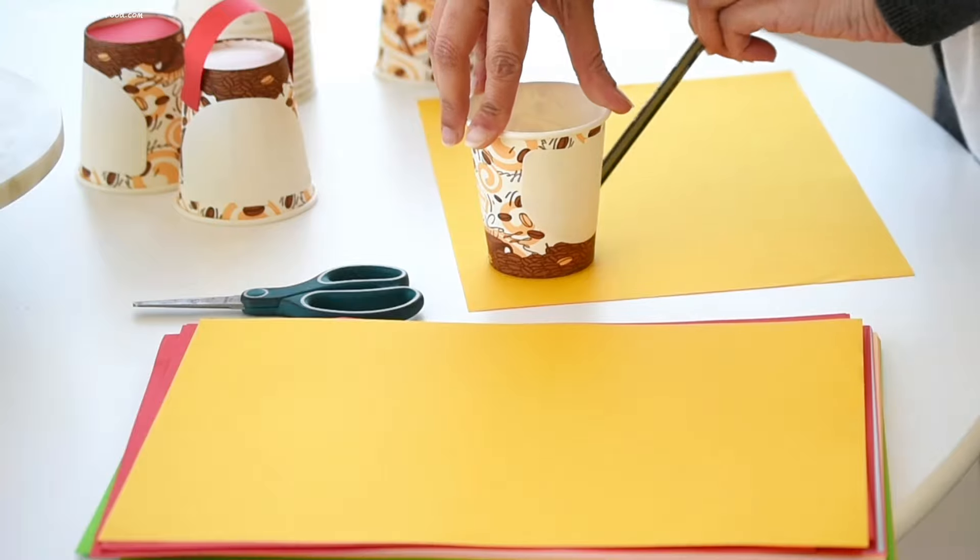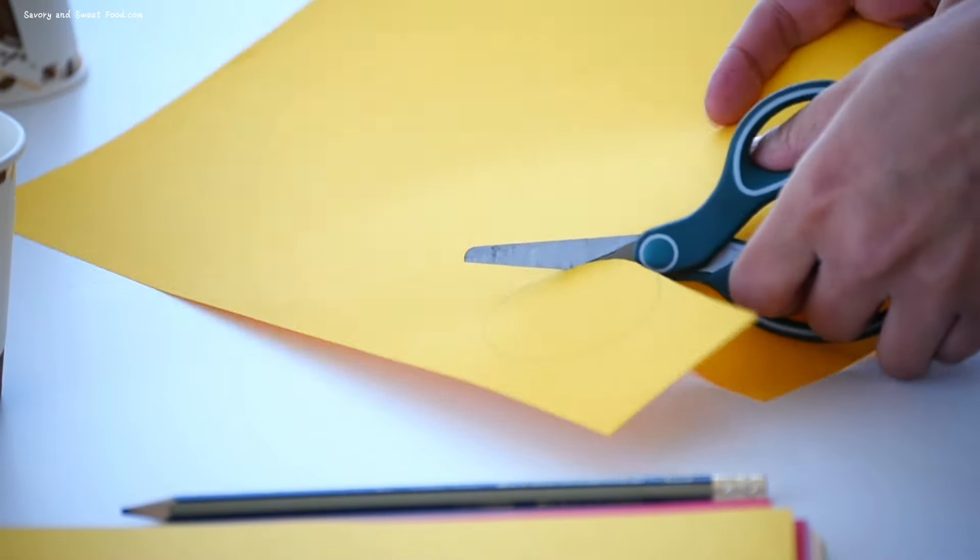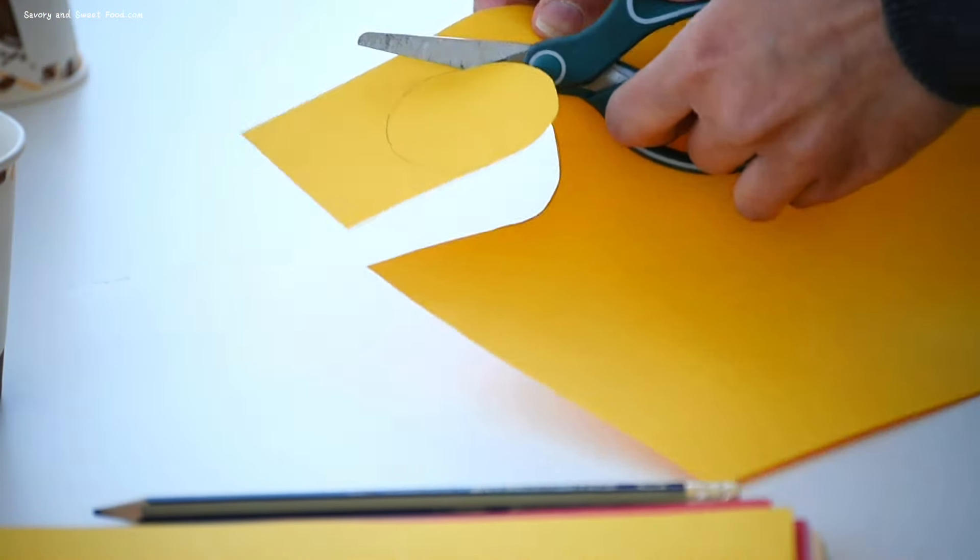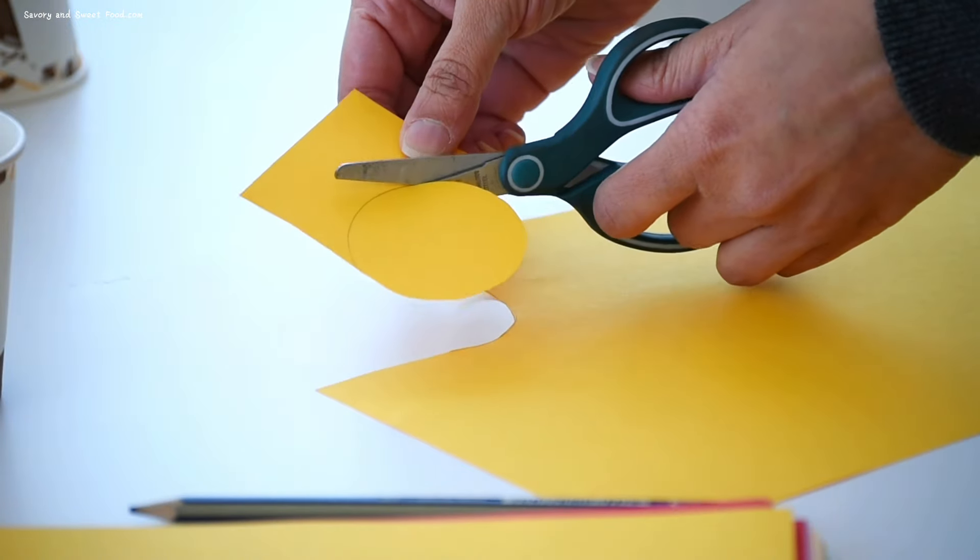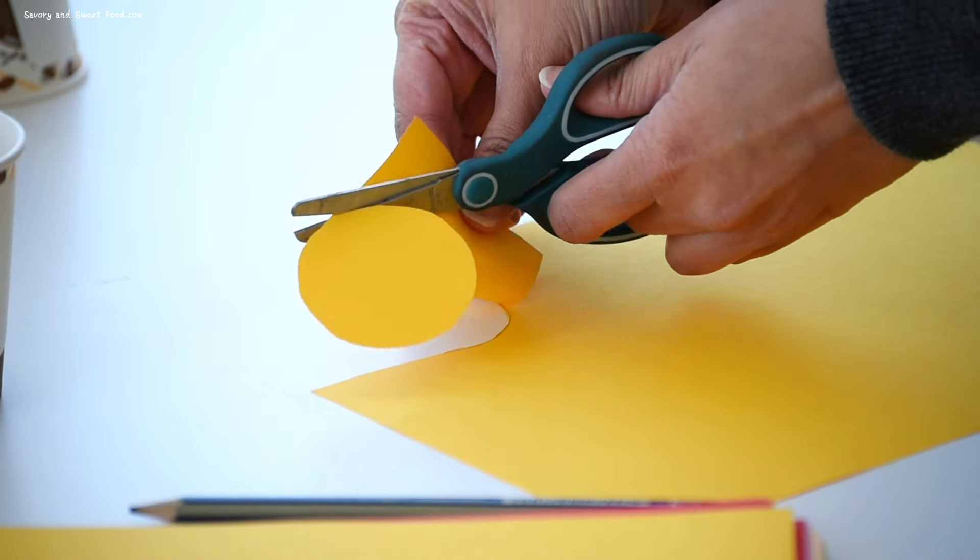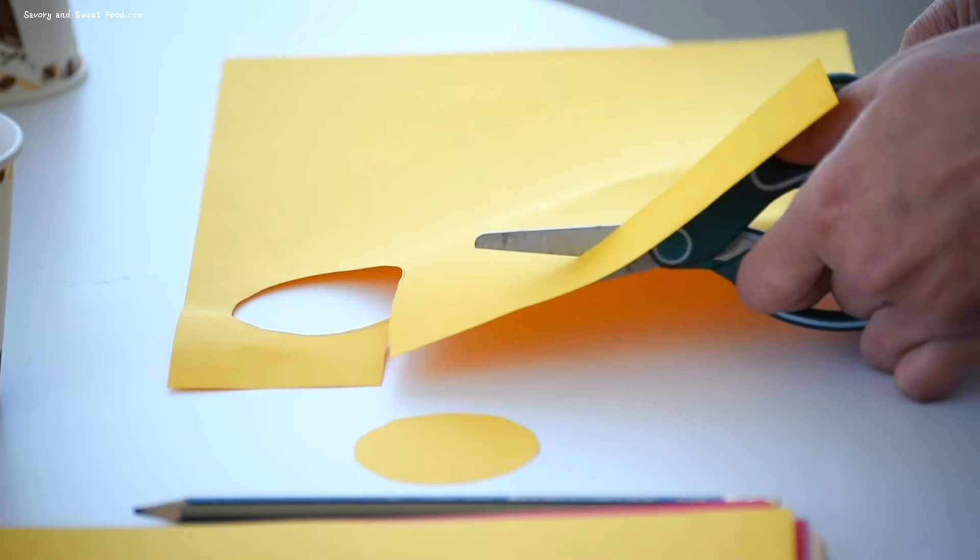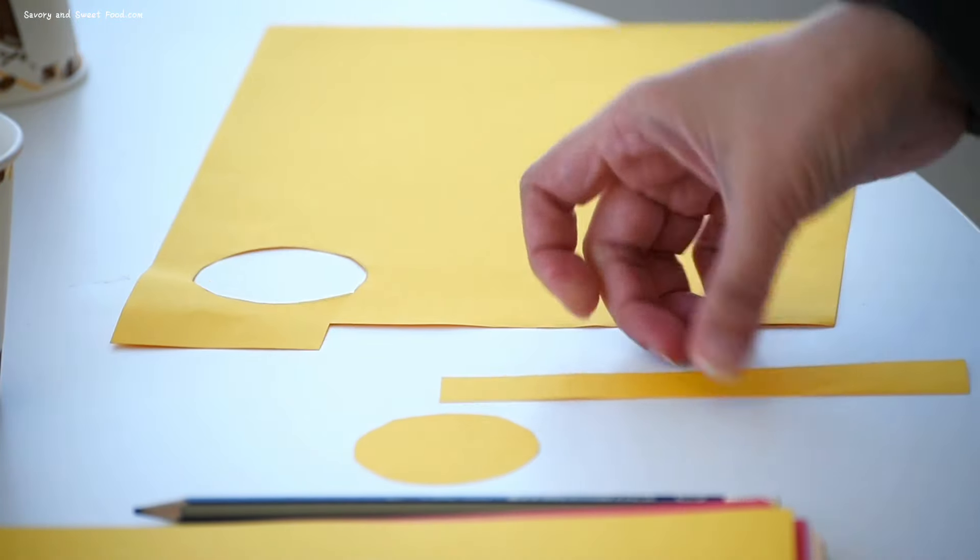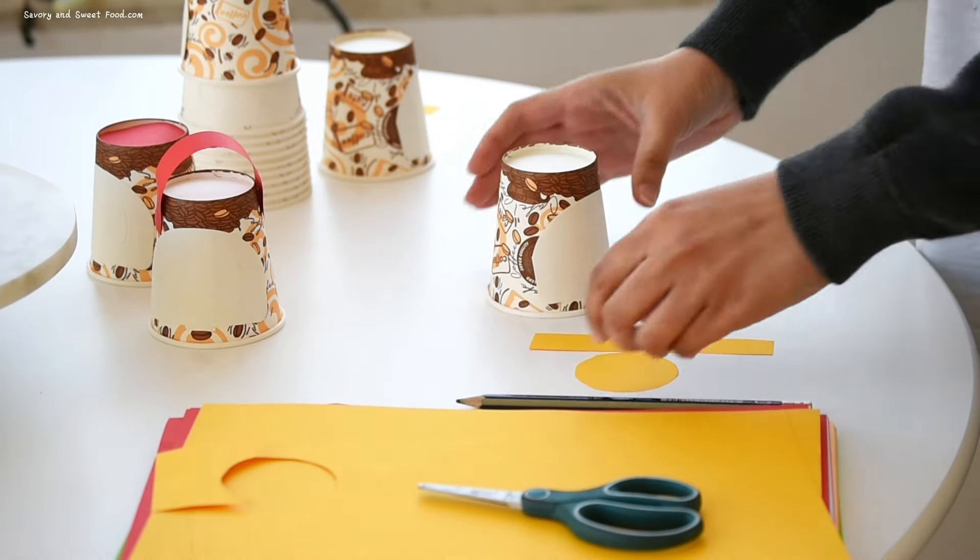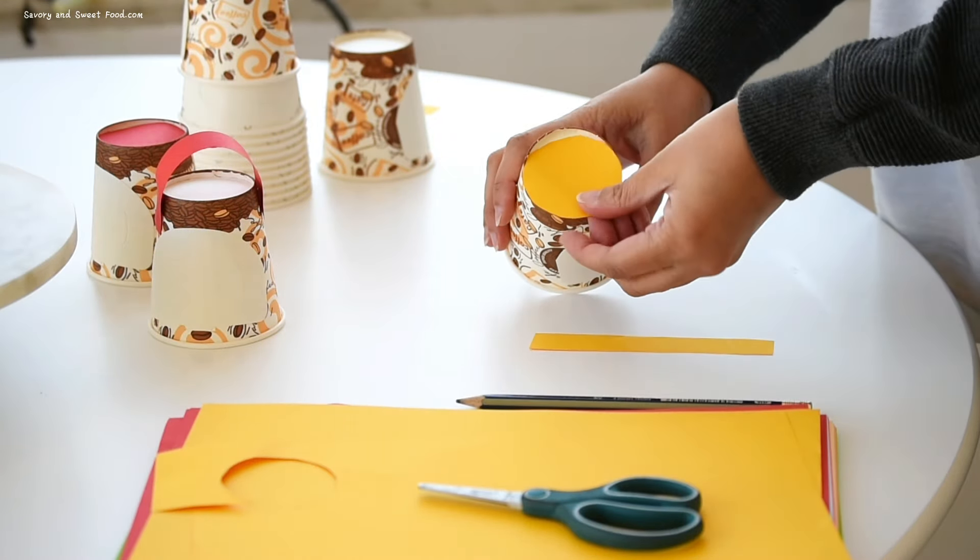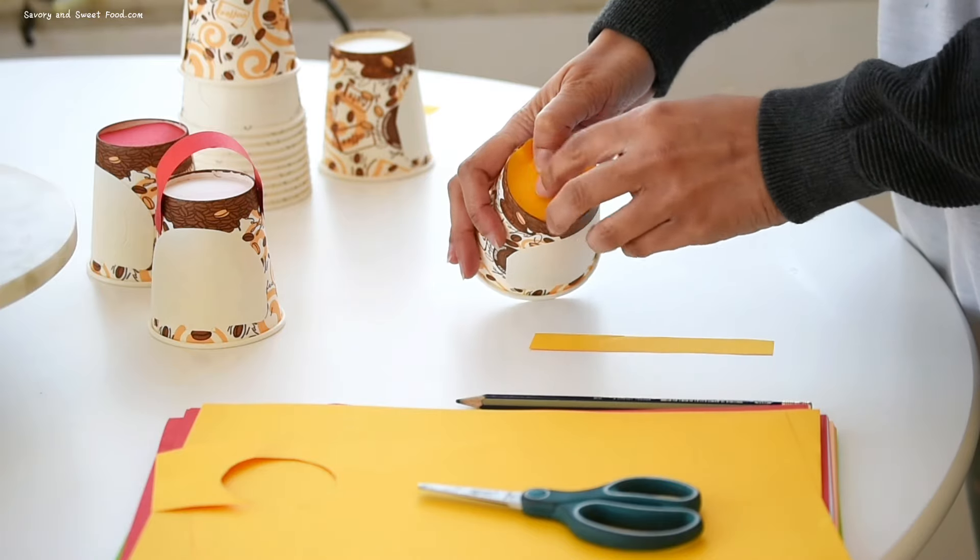Next up is the matching cup activity. Using colorful papers and cups, I created a fun matching game for Omar. Each cup had a circle cut out with a corresponding colored handle. Omar's task was to match the cups by placing the one with the handle over the one with the matching colored circle. You can understand better when you see the video clips.